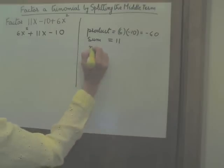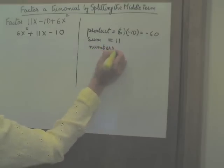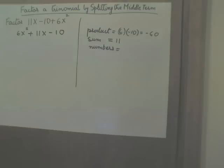So what are these numbers we are looking for? Once again, we need two numbers whose product is the product of the leading coefficient and the constant term, 6 times negative 10, and whose sum is the coefficient of the middle term, 11.